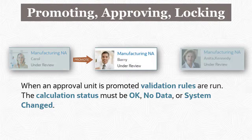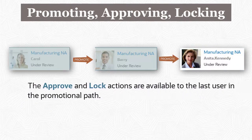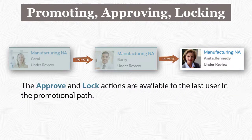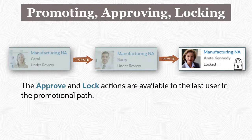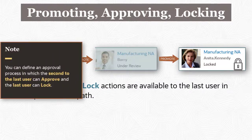If the promotion is successful, the next user in the promotional path becomes the current owner and receives an email notification. When the last owner in the promotional path is reached, the Approve action becomes available. When the status changes to Approved, the data becomes read-only for all users except service administrators. After a unit is approved, the Lock action becomes available; locked data is read-only for all users, including system administrators. Note that you can optionally define an approval process in which the second-to-last user in the promotional path has the Approve action available and the last owner the Lock action, allowing Approve authority and Lock authority to be assigned to different users.